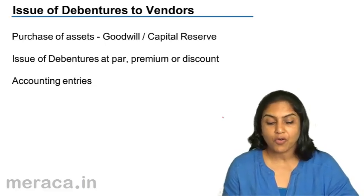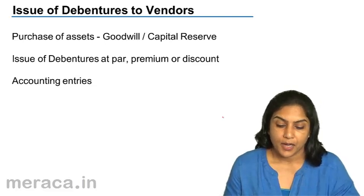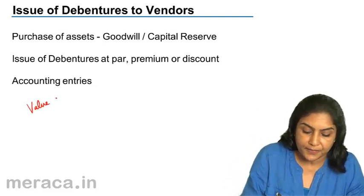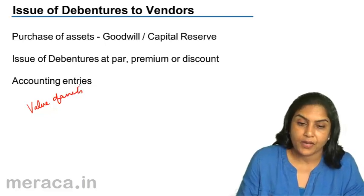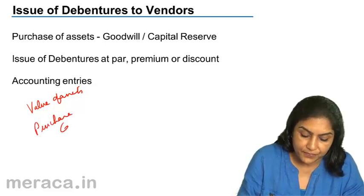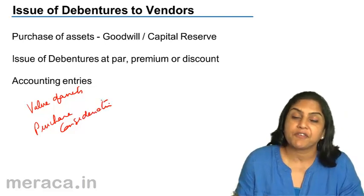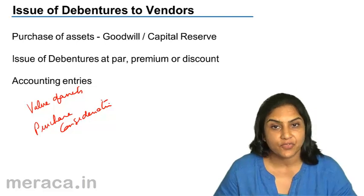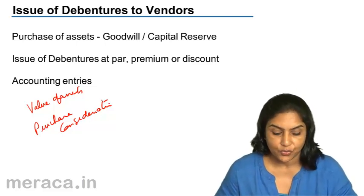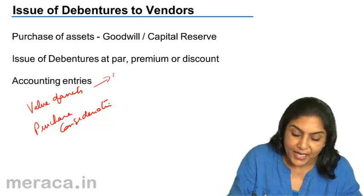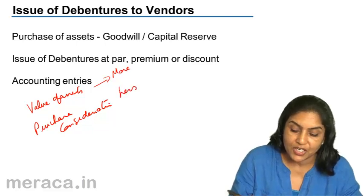When assets are purchased, there is the value of the assets on one side and the purchase consideration on the other side. If the value of assets taken over and the purchase consideration are the same, then the entry is very simple: we debit the assets account to the vendor with the amount which is due. But it is possible that sometimes the value of the assets we get is actually more and the purchase consideration is less.